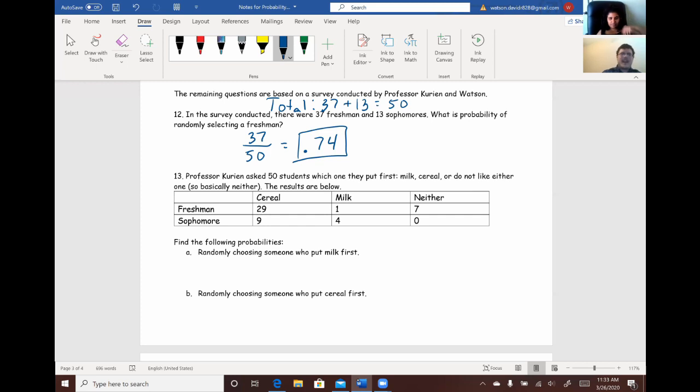All right. So, for part A, we're trying to find the probability of randomly choosing someone who put milk first. So, in order to find that, we already know there's 50 students total. We need to find the total amount of people who put milk first. So, there's one freshman and four sophomores that put milk first. So, you just add those up. There's a total of five students who put milk first. So, we put the number that put it first, which is five, over the total number, and that's 50.